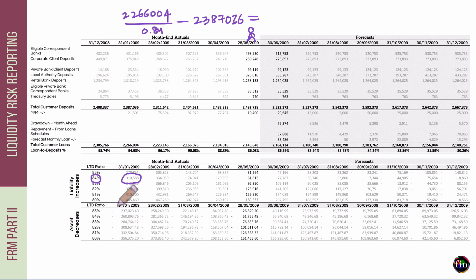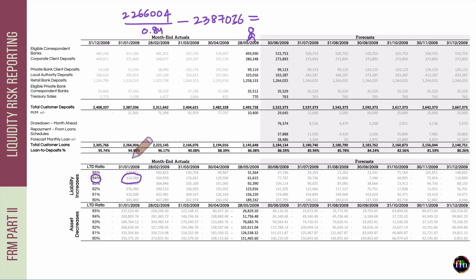Similarly, you can calculate how much your assets should be decreased — while retaining deposits or liabilities at the current level — to move the LTD from 94.93% to 84%. You can check that your assets need to be decreased by this amount, which is why this number is negative. This is what the deposit tracker report is about.